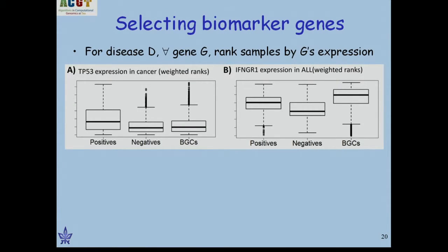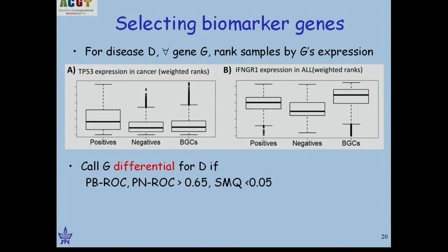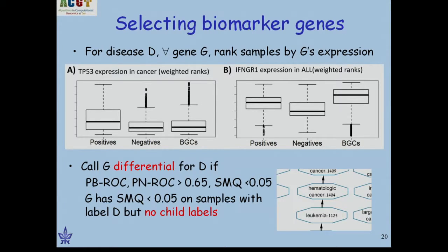How did we select biomarker genes? We wanted the positive to be different from both the negatives and the controls — a gene is differential if both scores are above 0.65 and the Q-value is significant. We also wanted to avoid inheriting labels from the disease ontology structure. For example, for hematological cancer with 1,400 samples (about 1,100 from leukemia), we required the Q-value to be significant even when limiting to the 300 non-leukemia samples.